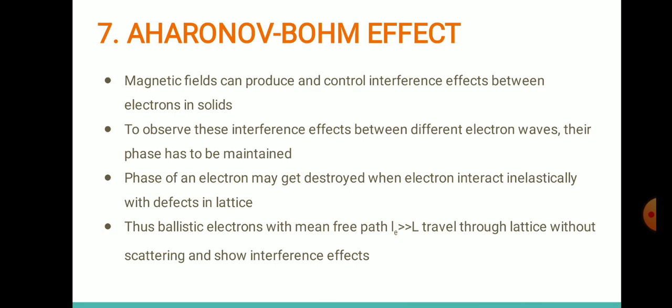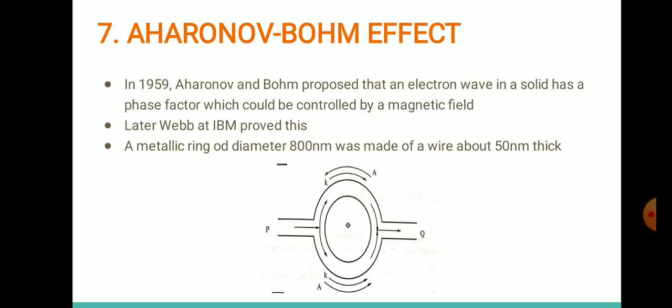This is the essence of the Aharonov-Bohm effect. In 1959, Aharonov and Bohm proposed that an electron wave in a solid has a phase factor which can be controlled by a magnetic field.